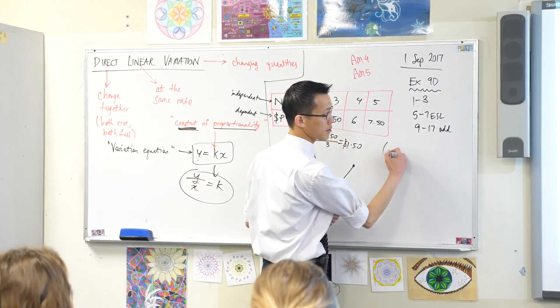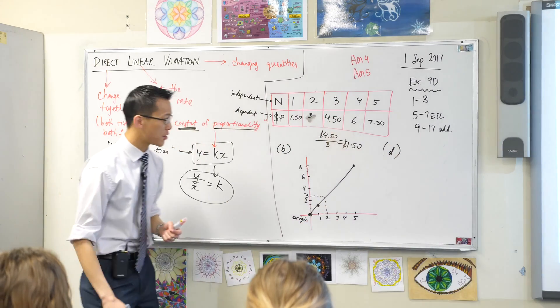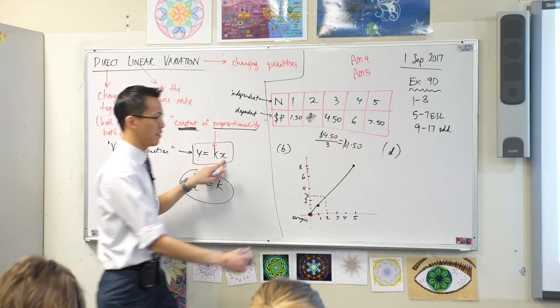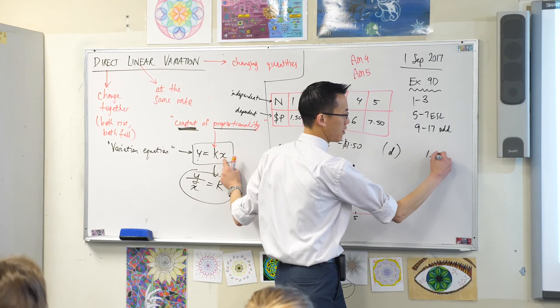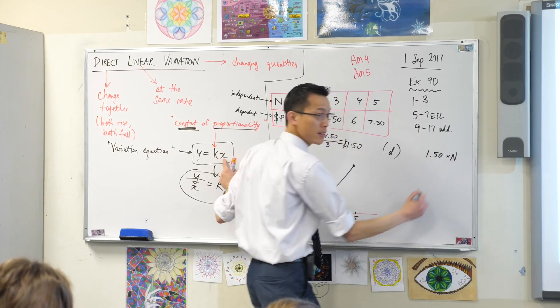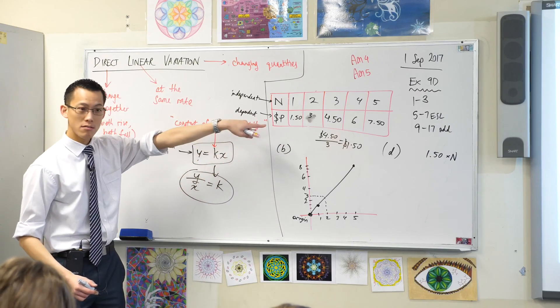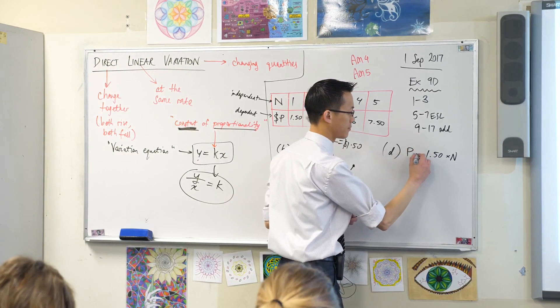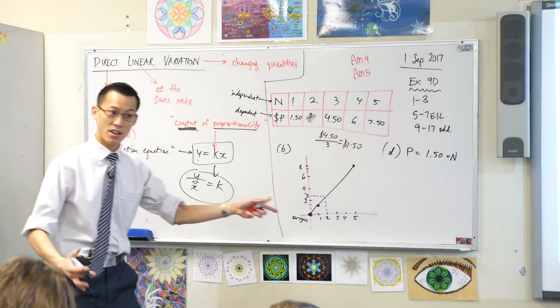So where I'm up to, part D. The linear equation will look like this. If this is going to be N, it'll be $1.50 times N, which leaves P, the price, over on the left-hand side. There's my linear equation.